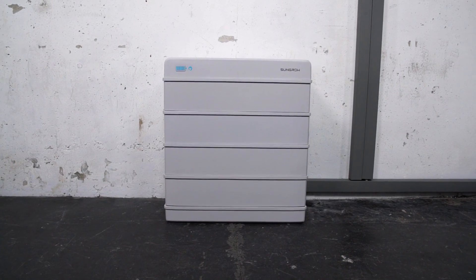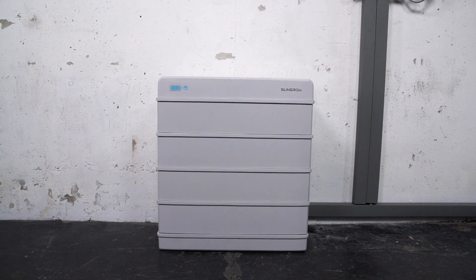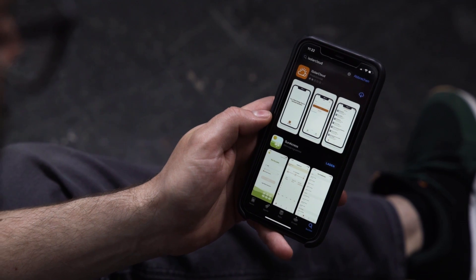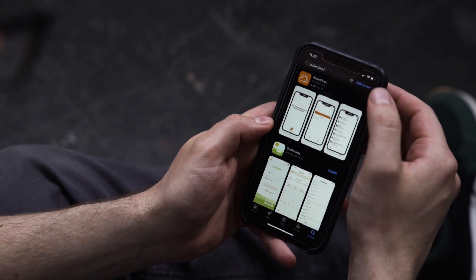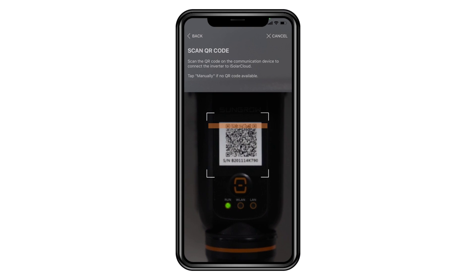If this is not the case, please refer to the manual where you will find a breakdown of the different light signals. That was it. The system is ready to run. If you already have set up the hybrid inverter in the iSolar cloud app, the battery will automatically be detected and added to the system.